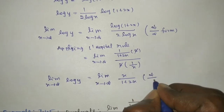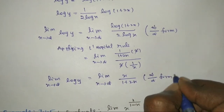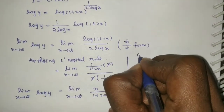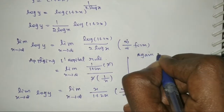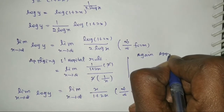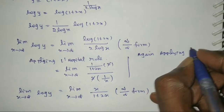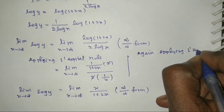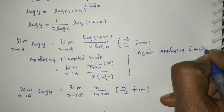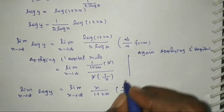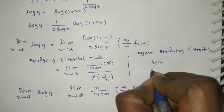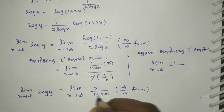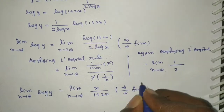We still have an infinity over infinity form, so we apply L'Hôpital's rule again. Differentiating: the numerator x gives 1, and the denominator (1 + 2x) gives 2. So the answer is 1/2.